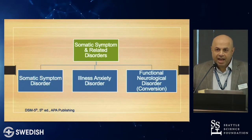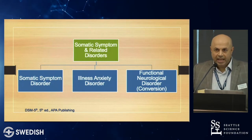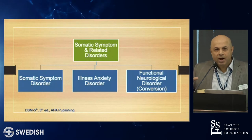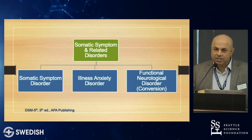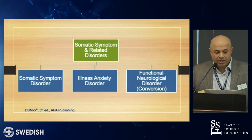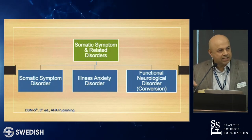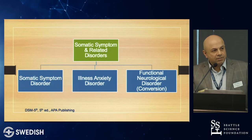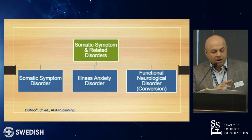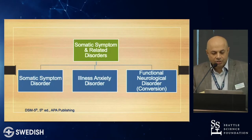In the DSM-5, we now have a classification that uses the term functional movement disorders or conversion disorder. DSM-4 required a psychiatric cause to be present for diagnosis; DSM-5 does not, because we may not know the cause. It's reclassified under somatic symptom and related disorders, alongside illness anxiety disorder and somatic symptom disorder with multiple neurological and constitutional symptoms.